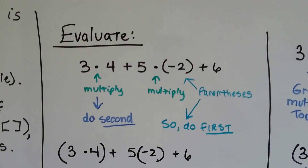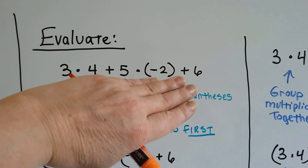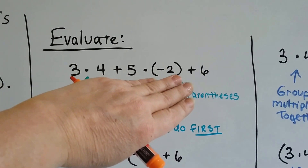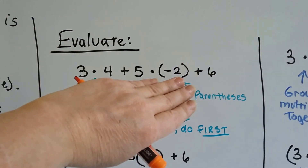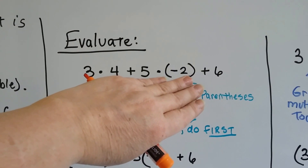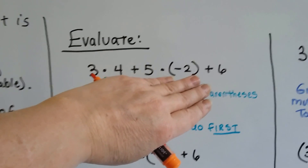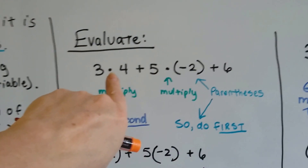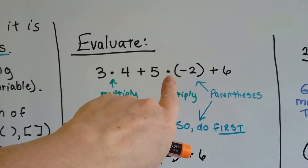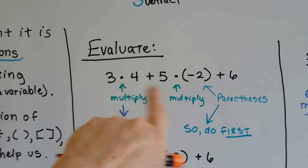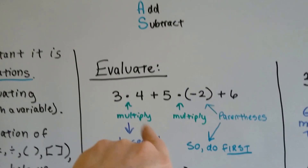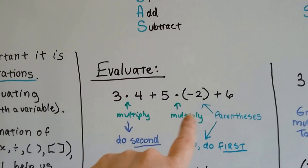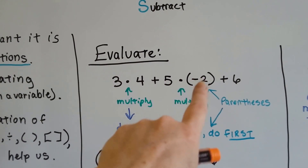When it says to evaluate and you see a long equation like this — and I say equation because there are no variables — we follow the order of operations. Here's a multiplication (that's what the dot means) and here's another multiplication, so we have to do the multiplication first. But we have to do parentheses before multiplication, so we're going to do that parenthesized part first.